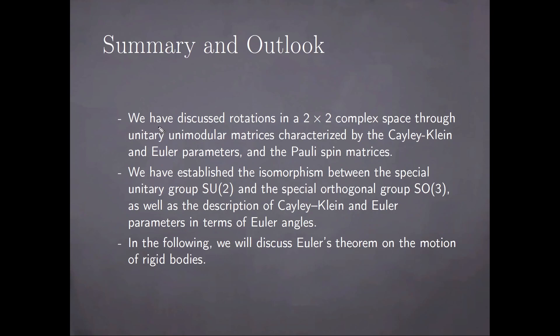In summary, we have discussed rotations in a two-dimensional complex space through unitary unimodular matrices characterized by the Cayley-Klein and Euler parameters and the Pauli spin matrices. We have established the isomorphism between the special unitary group SU(2) and the special orthogonal group SO(3), as well as the description of Cayley-Klein and Euler parameters in terms of Euler angles.